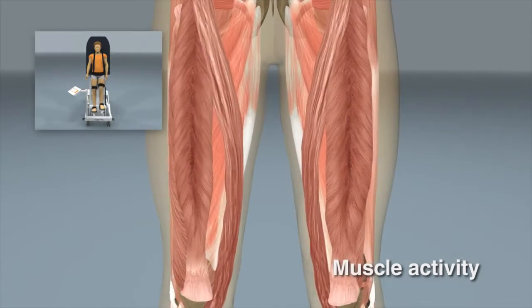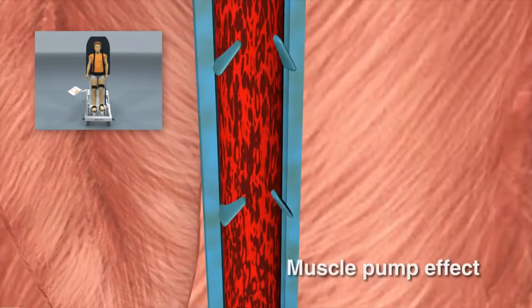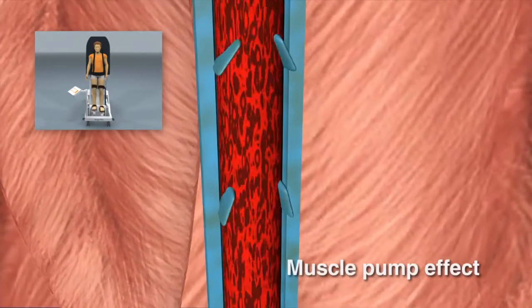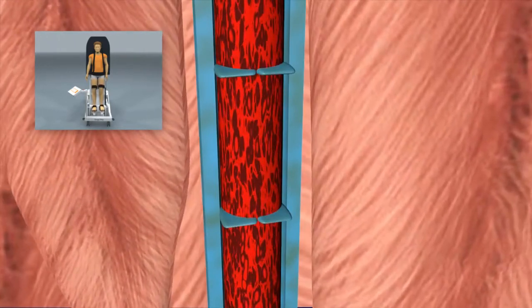A rhythmic muscle pump effect is induced, which helps to maintain venous return during early verticalization. It increases the mean arterial blood pressure and leads to faster stabilization of the cardiovascular system.